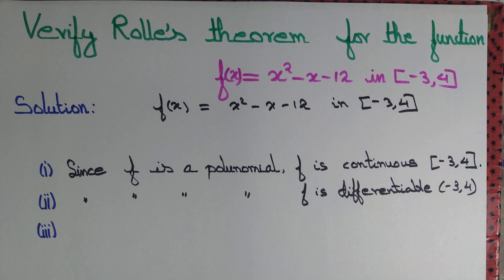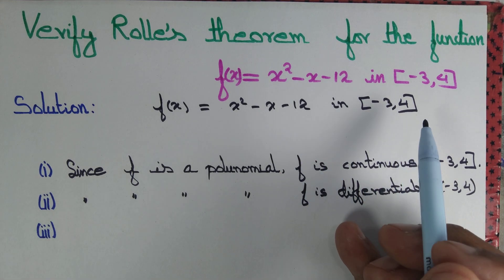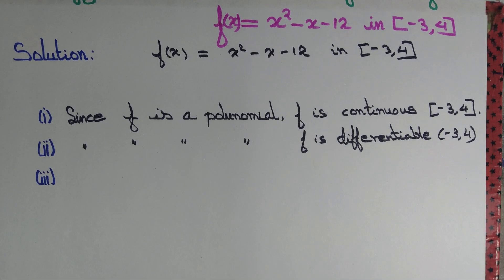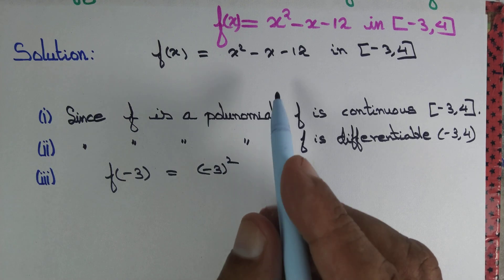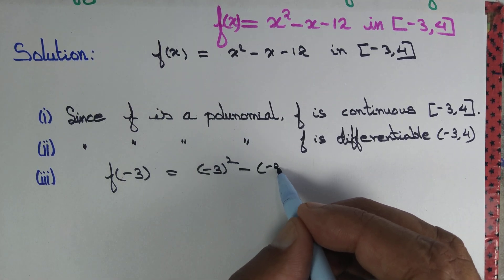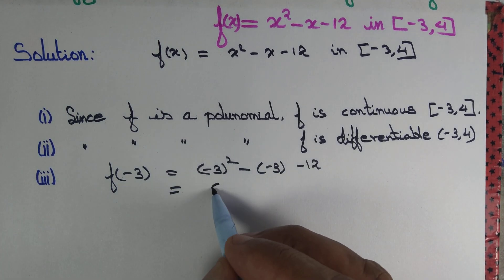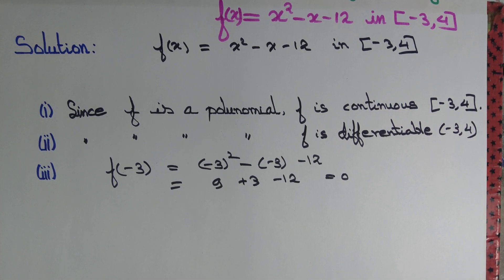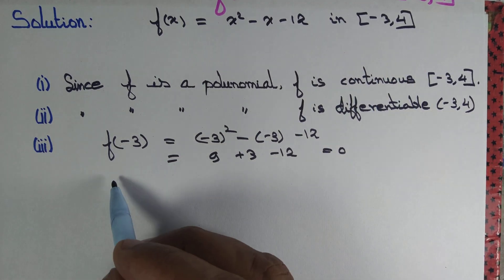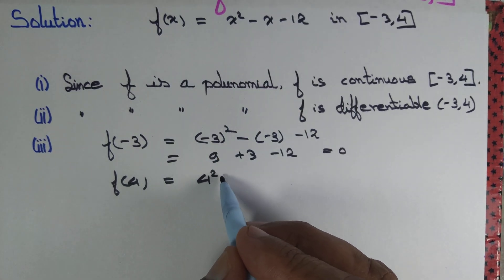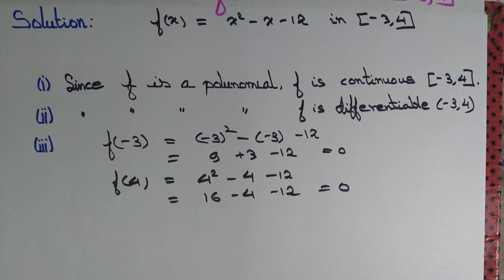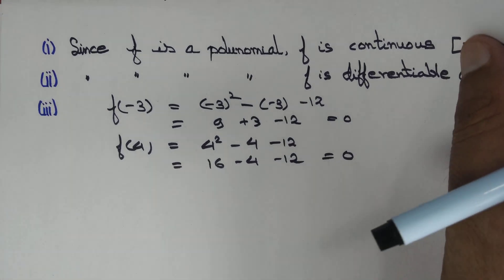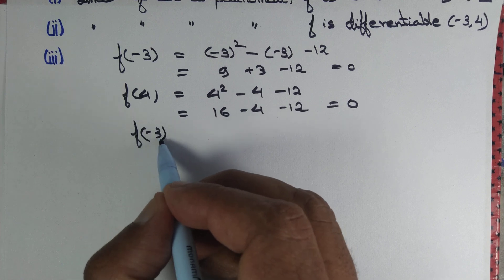Lastly, we need to show the value of the function at the endpoints are equal. The endpoints are -3 and 4. f(-3) = (-3)² - (-3) - 12 = 9 + 3 - 12 = 0. And f(4) = 4² - 4 - 12 = 16 - 4 - 12 = 0. So f(-3) is exactly equal to f(4).